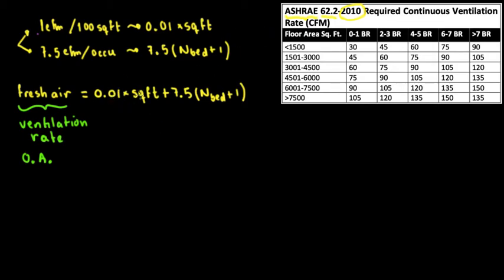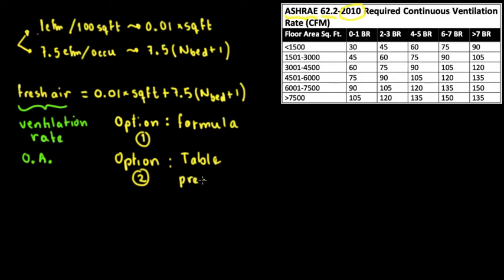In order to comply with this standard, which is the ASHRAE 62.2, we have two options. Option 1 is the formula. Option 2 is the table, and they also call it in a fancy way, prescriptive table, because it's based on parameters and values. Let's do an example.